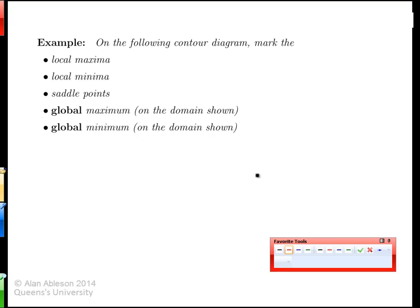Let's take a look at another contour diagram, a more complicated one than the last one, and see if you can identify the local mins and maxes and saddle points, as well as the global max and global min, at least on the domain shown.